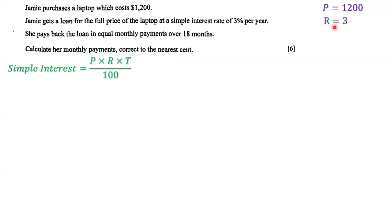The rate is 3% because it says a simple interest rate of 3%. The time is 18 months because she pays back the loan over 18 months. But for simple interest, we need time expressed in years. Since there are 12 months in a year, 18 divided by 12 equals 1.5 years.